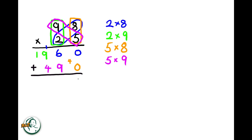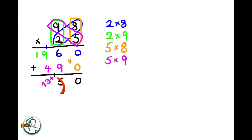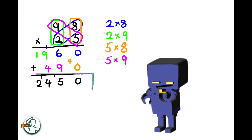Now, we add these two sets of products. Adding 0 and 0 gives us 0. 6 plus 9 is 15. We write down the 5 and carry over the 1. And 9 plus 4 is 13. Adding the carried over 1 to 13, we get 14. We write down the 4 and carry over the 1. 1 plus 0 is 1. Adding the carried over 1 to 1, we get 2. Therefore, the product of 98 and 25 is 2,450.